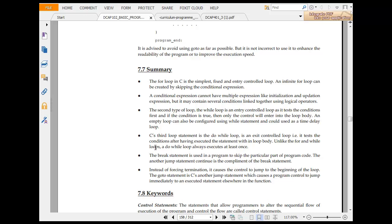So the for loop in C. First, entry control of finite loop can create skipping condition expression. A condition expression can have multiple expressions like initiation and updation.